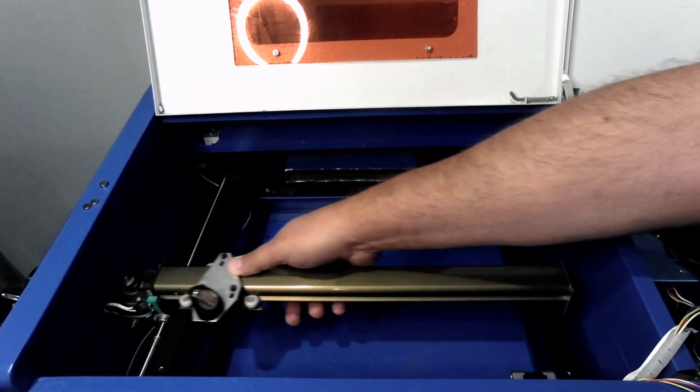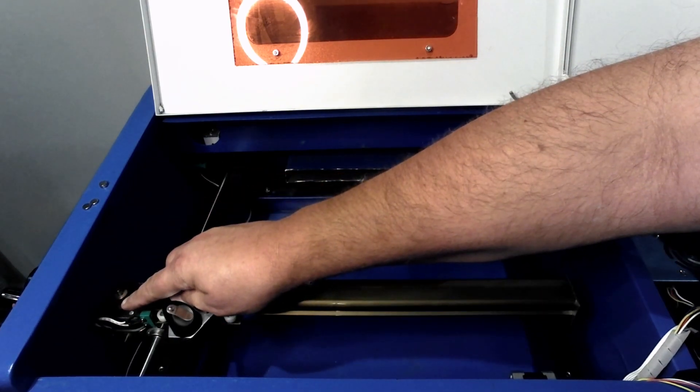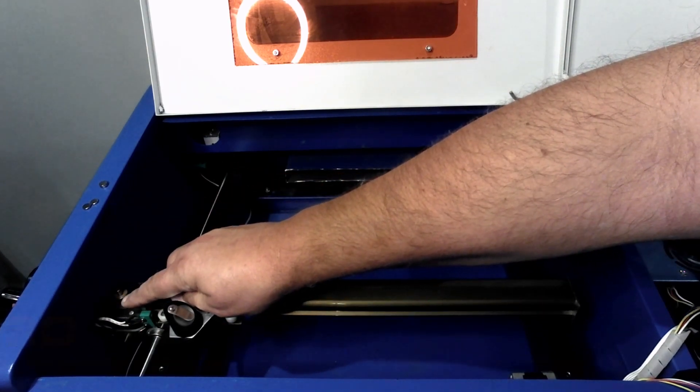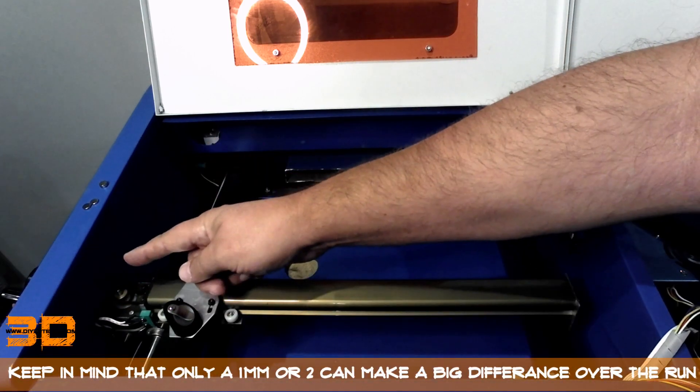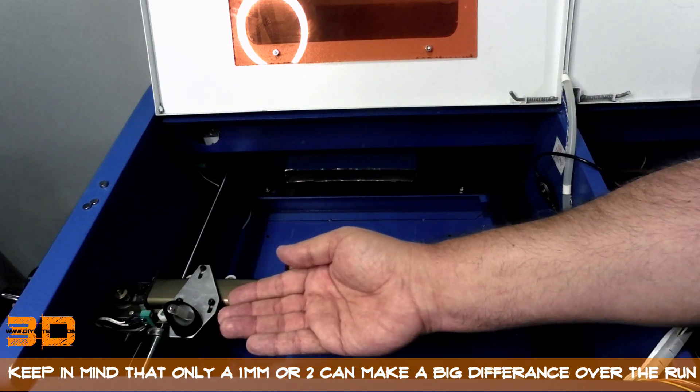as the X gantry moves out this way and the beam goes to hit the second-order mirror which typically sits here, it's going to overshoot it if it's too low. So I had to raise this up slightly.